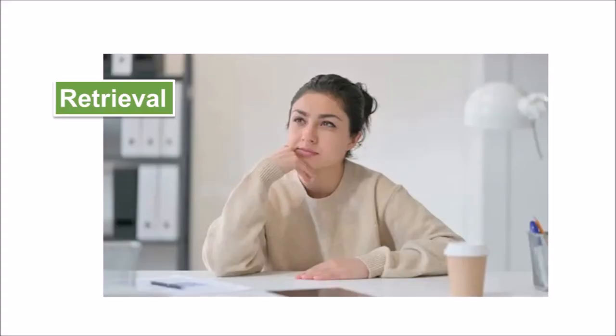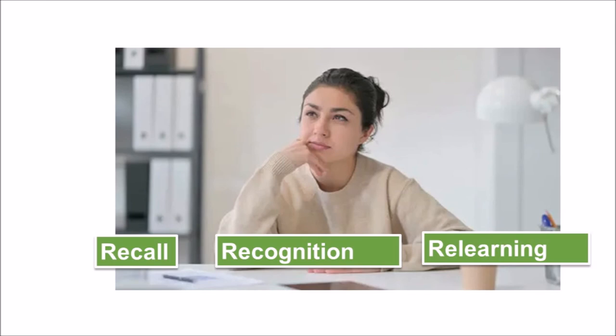The act of getting information out of memory storage and back into conscious awareness is known as retrieval. Our ability to retrieve information from long-term memory is vital to our everyday functioning. There are three ways to retrieve information from long-term memory storage systems: recall, recognition, and relearning. Recall is what we most often think about when we talk about memory retrieval — it means you can access information without cues. For example, you would use recall for an essay test.